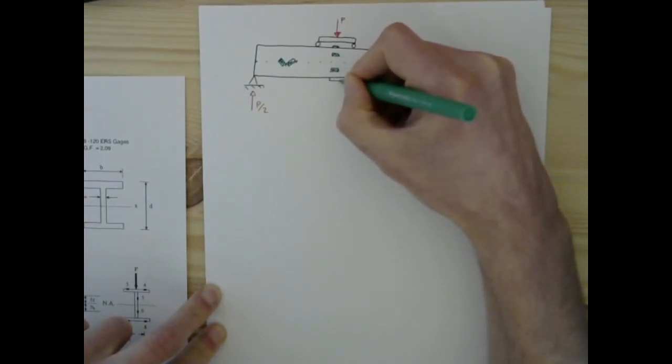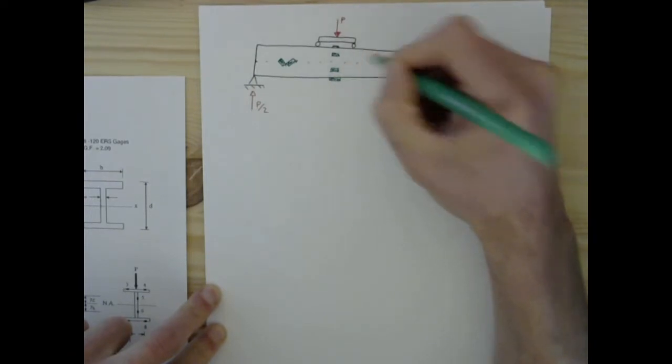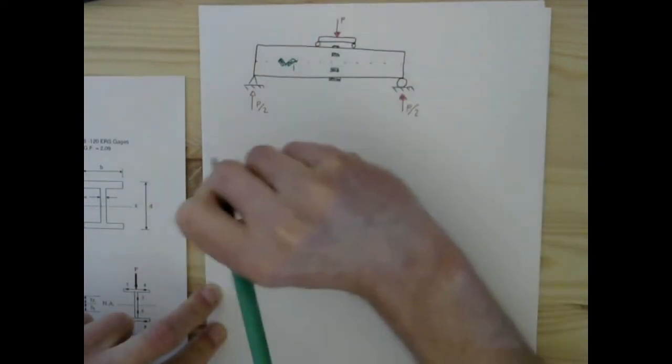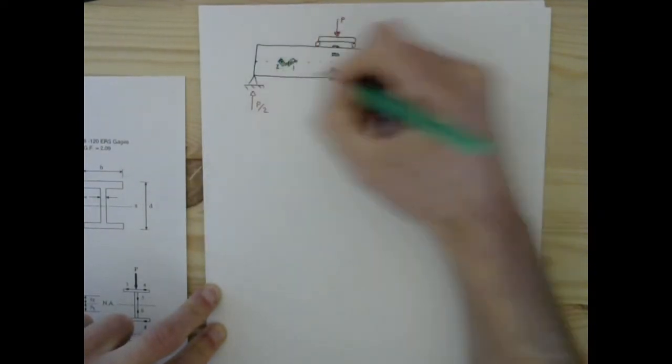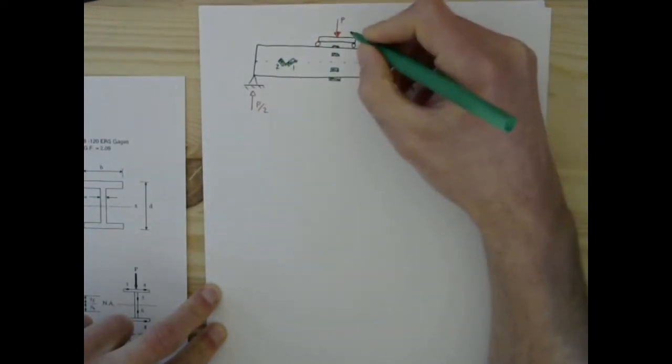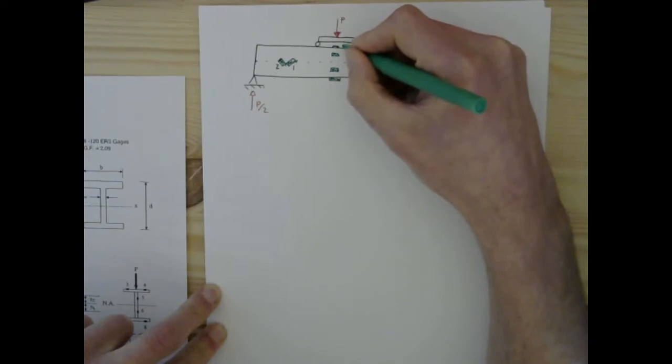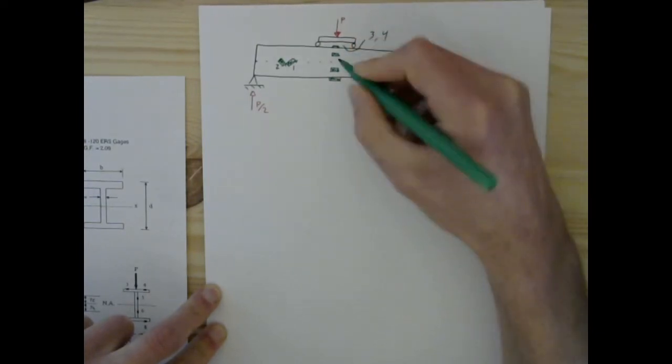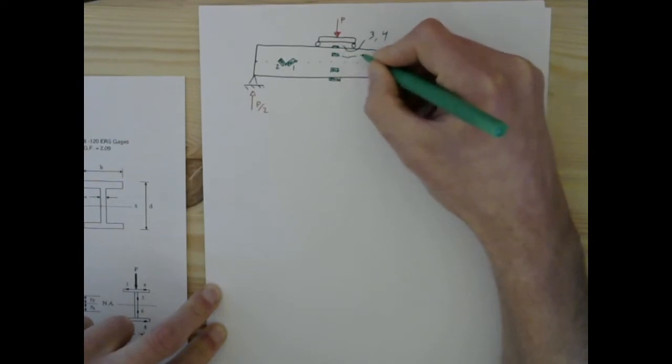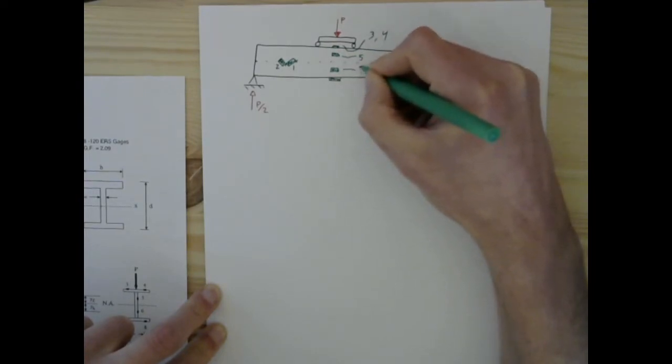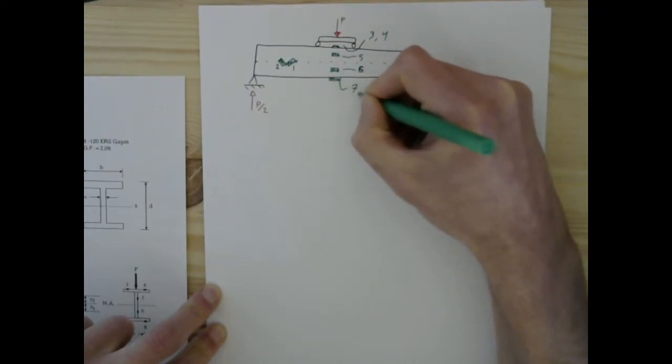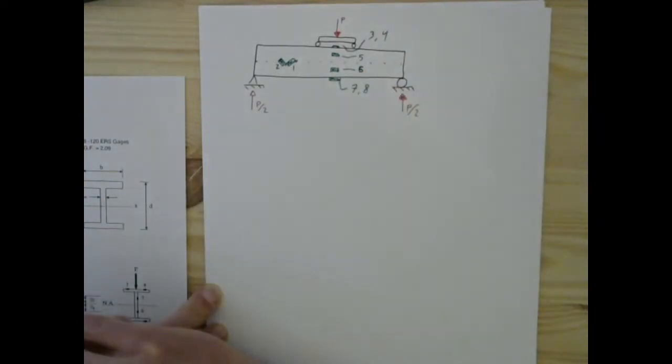Now, there's going to be, that will be strain gauge 1, that will be strain gauge 2, this will be strain gauges 3 and 4, this is strain gauge 5, this is 6, and this will be 7 and 8.